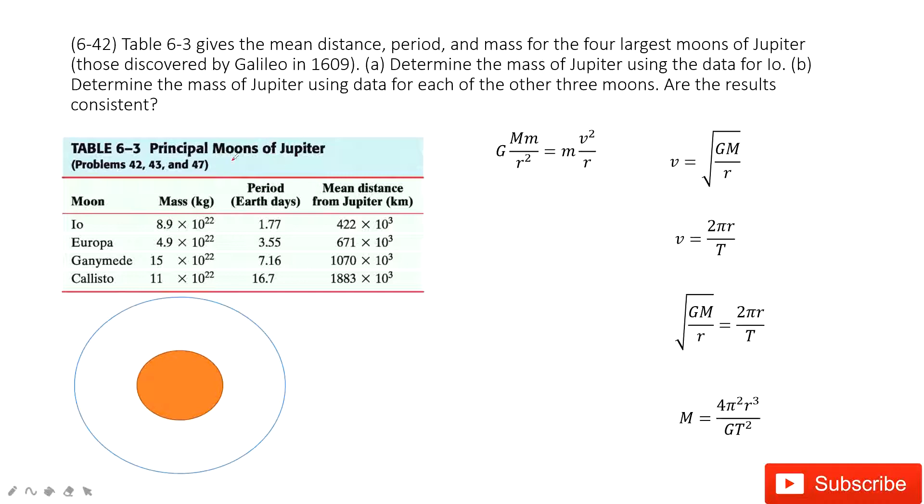In this one, you can see there is a table. We consider the model about the circular motion of the moons of Jupiter. So the moons of Jupiter, this is Jupiter, and the moons do the circular motion around it. In this one, we need to determine the mass of Jupiter.